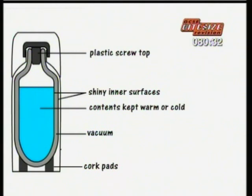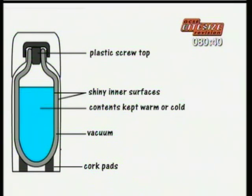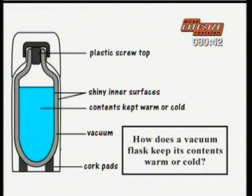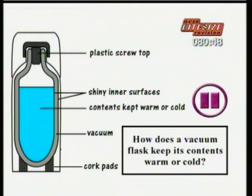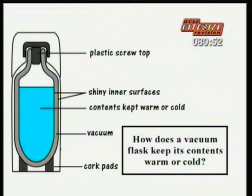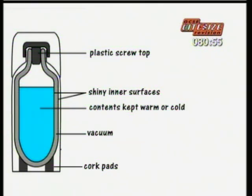This is a cross section of a vacuum flask. It can keep things inside it cool or hot, so it's designed to stop heat escaping from or getting into the flask. Use what you know about how heat travels to work out how it works. Heat can travel in three ways — by conduction, by convection and by radiation — and a vacuum flask uses several tricks to stop all three.